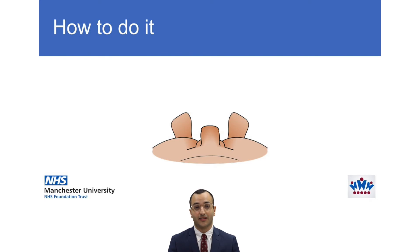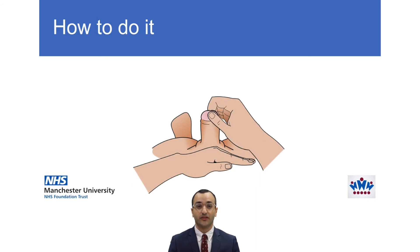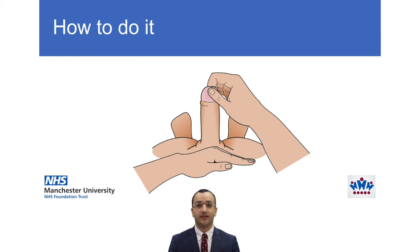We'll now cover how to estimate your stretch penile length. Step one: place your left hand over the base of your penis and push down lightly so that you can get a good view of your penis. Step two: with your foreskin retracted, hold the head of your penis between your thumb and forefinger. Step three: extend your right hand forwards to bring your penis to a comfortable length. This provides a visual estimate of your stretch penile length.